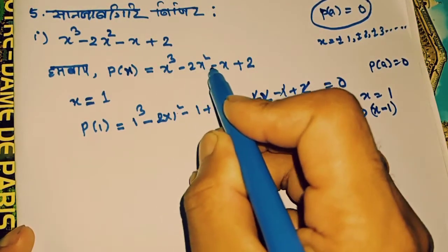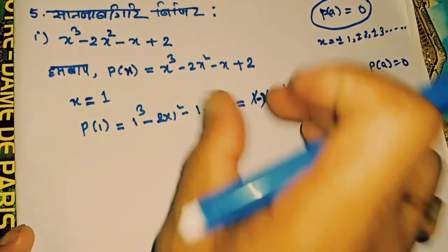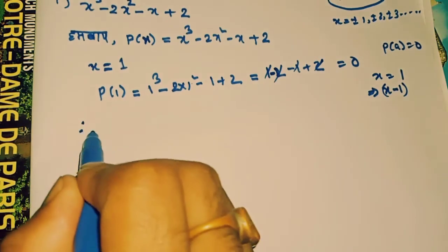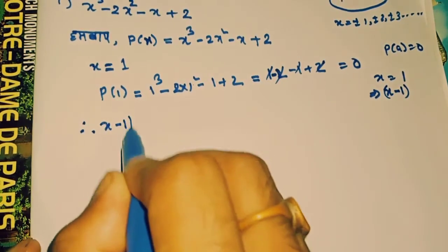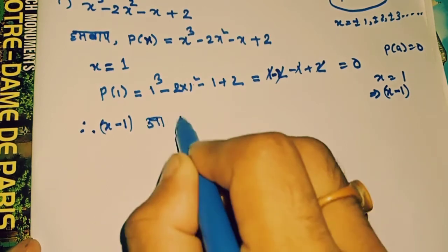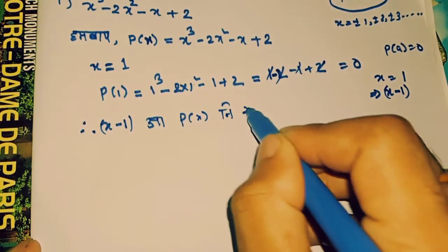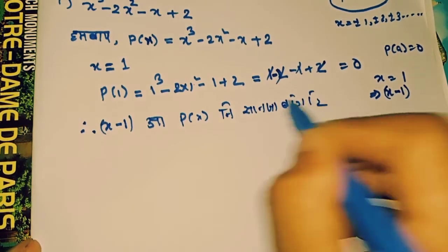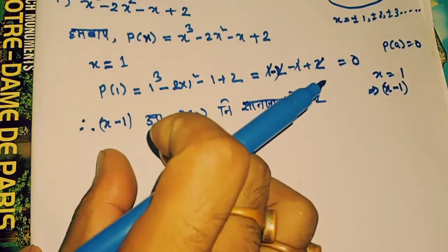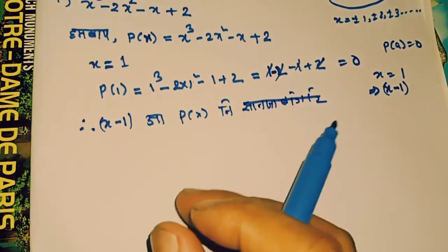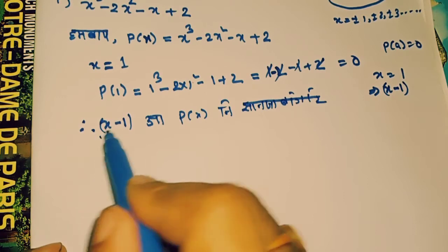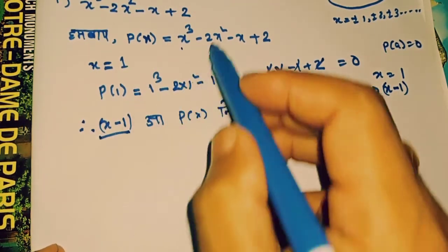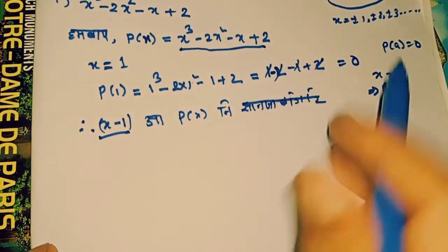x gives minus 2. x squared minus x plus 2 is equal to 3. If you want to see x minus 1, x minus 1 is vx is equal to 3. If you want to see x minus 1, x minus 1 is vx.